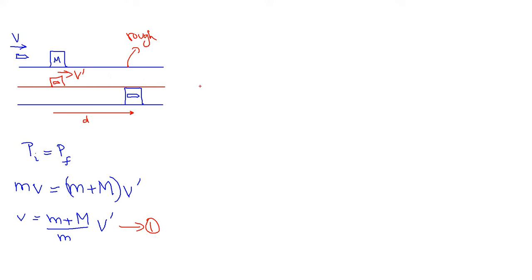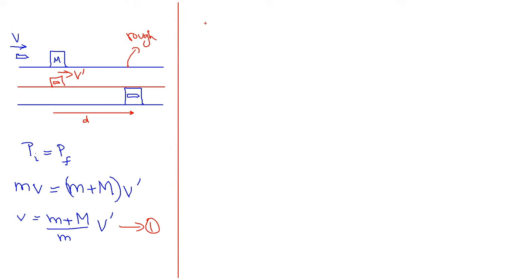We can apply Newton's second law to get an expression for v prime. The final velocity of the block is zero and the initial velocity is v prime. We use the kinematic equation: v_f squared equals v_i squared plus 2 a d, where d is the displacement.